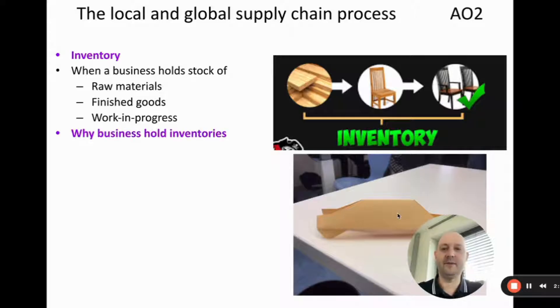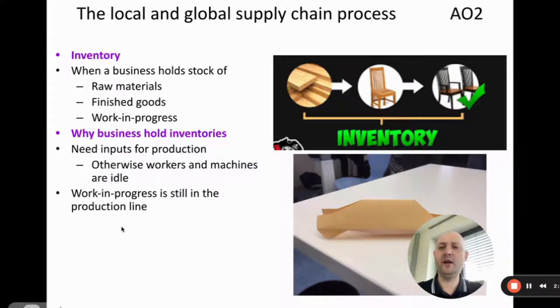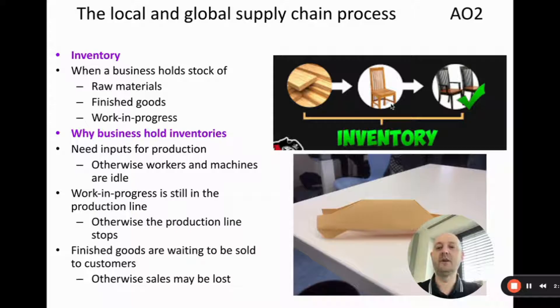Why do we hold inventories? Well, we need inputs for production, so we need the wood to produce the tables, otherwise workers and machines will do nothing and they're idle. Work-in-progress, otherwise the production line stops. If you're painting chairs, then obviously you need the unpainted chairs. Also, we need to store finished goods, otherwise sales may be lost because if customers come along and want to buy the chair and you don't have them, then clearly you're going to lose sales. In the second video we're going to look at just-in-time production where we hold lower levels of stock.